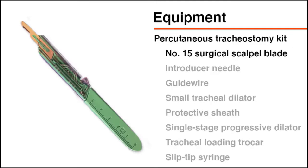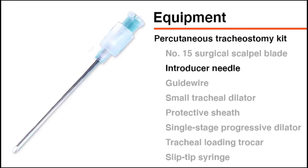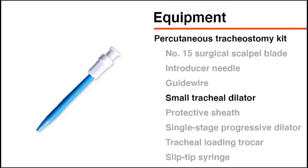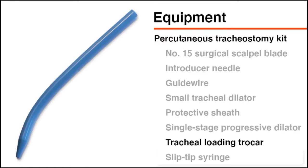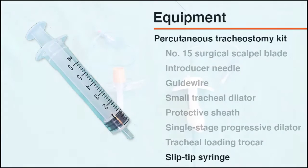A percutaneous tracheostomy kit generally includes a number 15 surgical scalpel blade, an introducer needle, a guide wire, a small tracheal dilator, a protective sheath, a single-stage progressive tracheal dilator, a tracheal loading trocar, and a small slip-tip syringe.